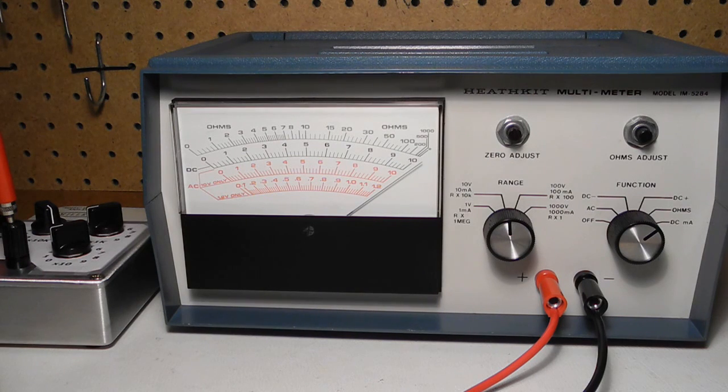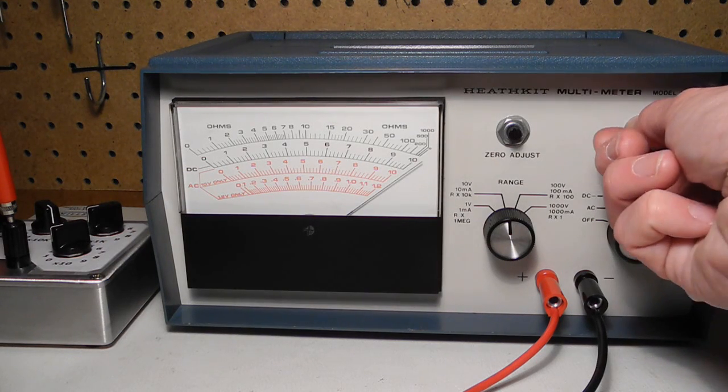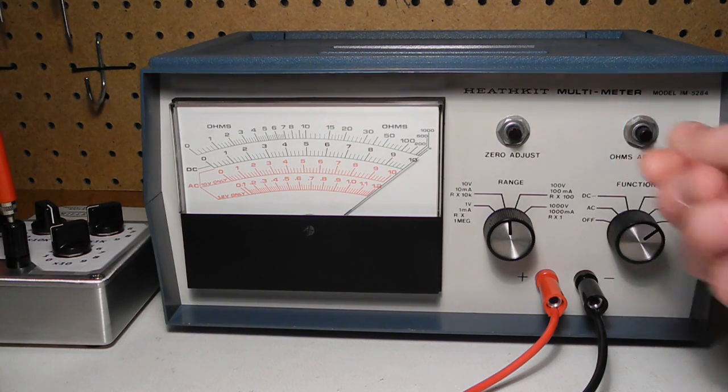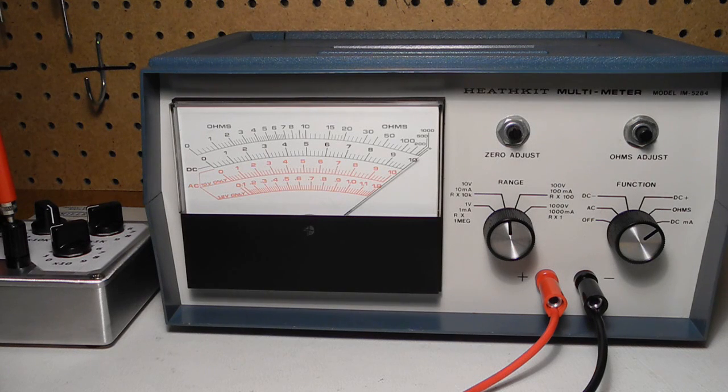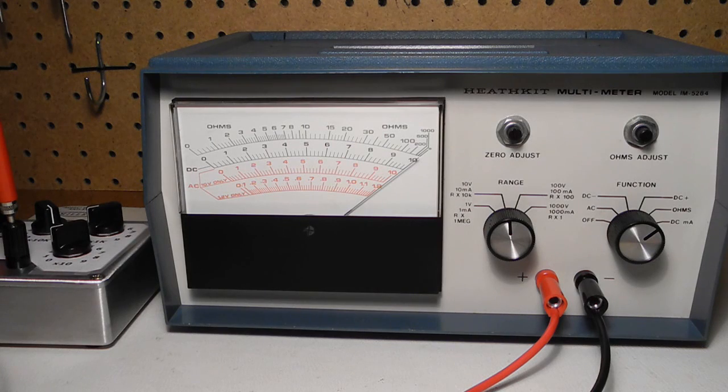For the ohms function, you need to turn the ohms adjust knob so that it reads full scale or infinite resistance with the test leads open. And also check that with the lead shorted, it reads zero. With the resistance decade box connected, I can read off various values of resistance.